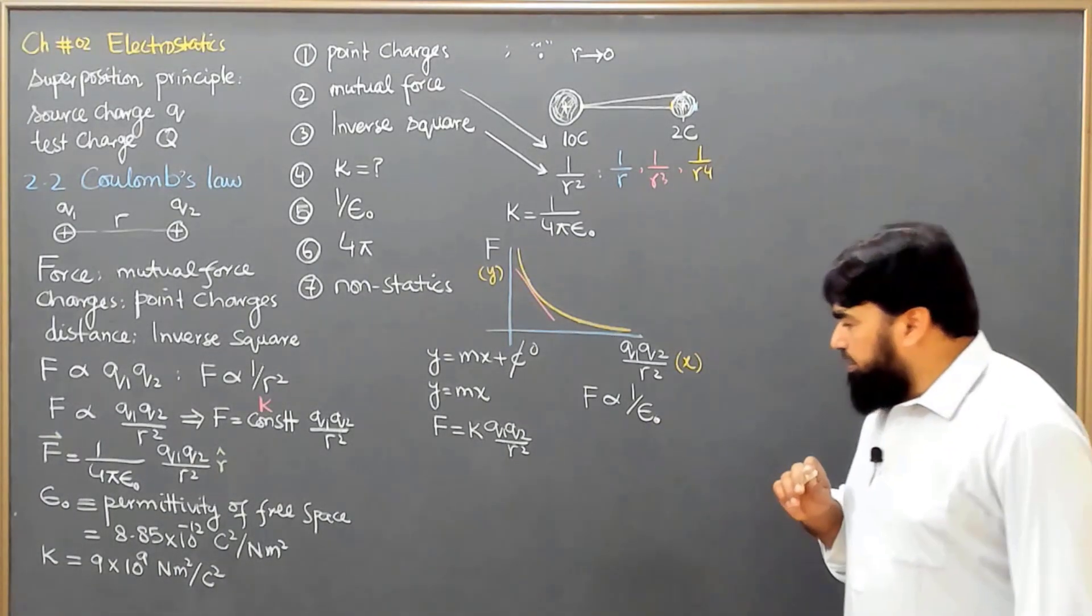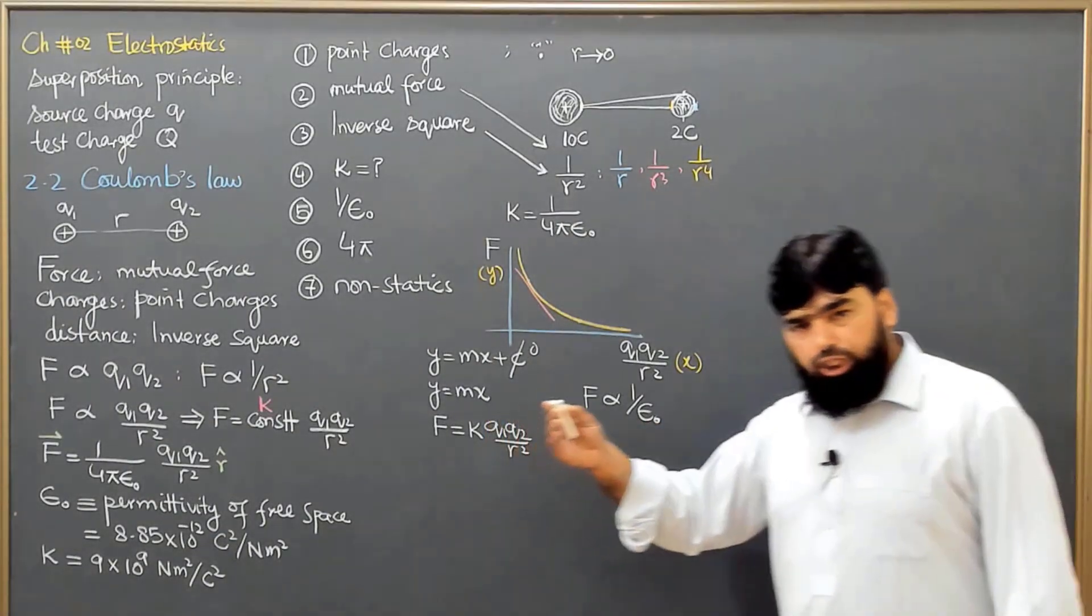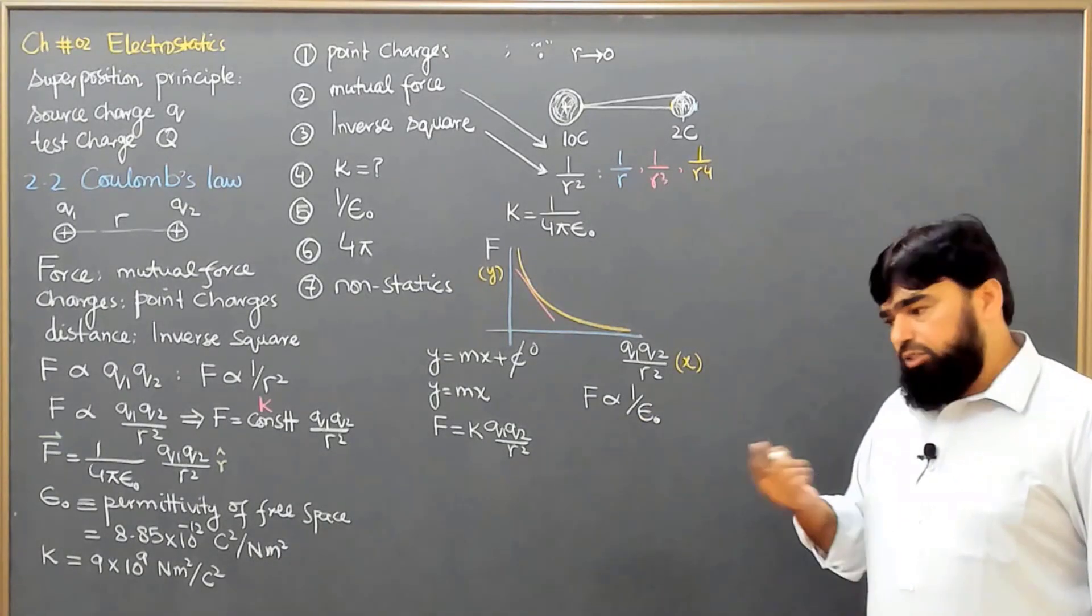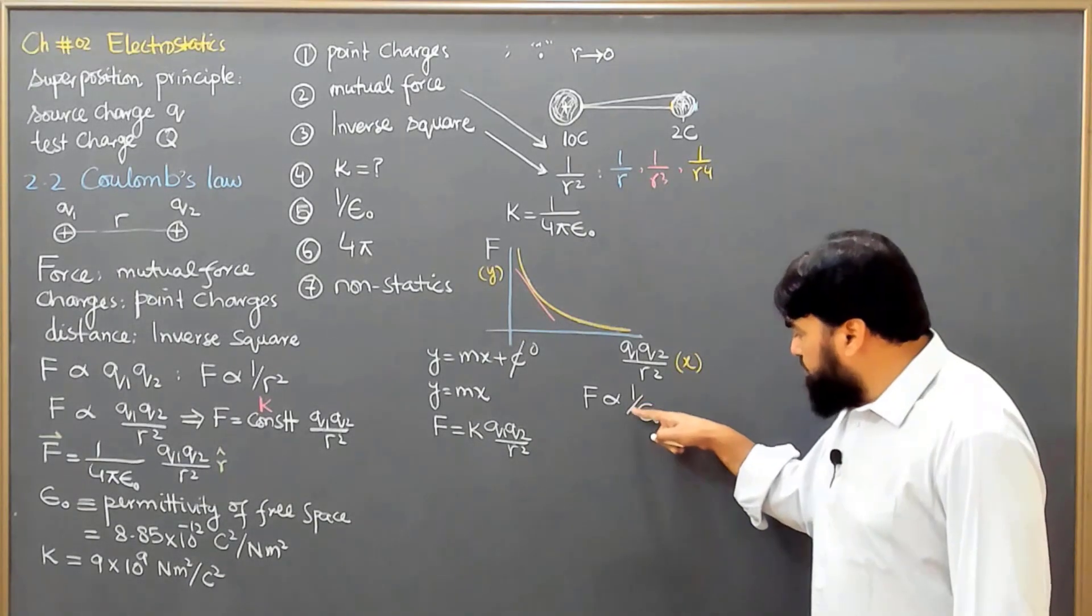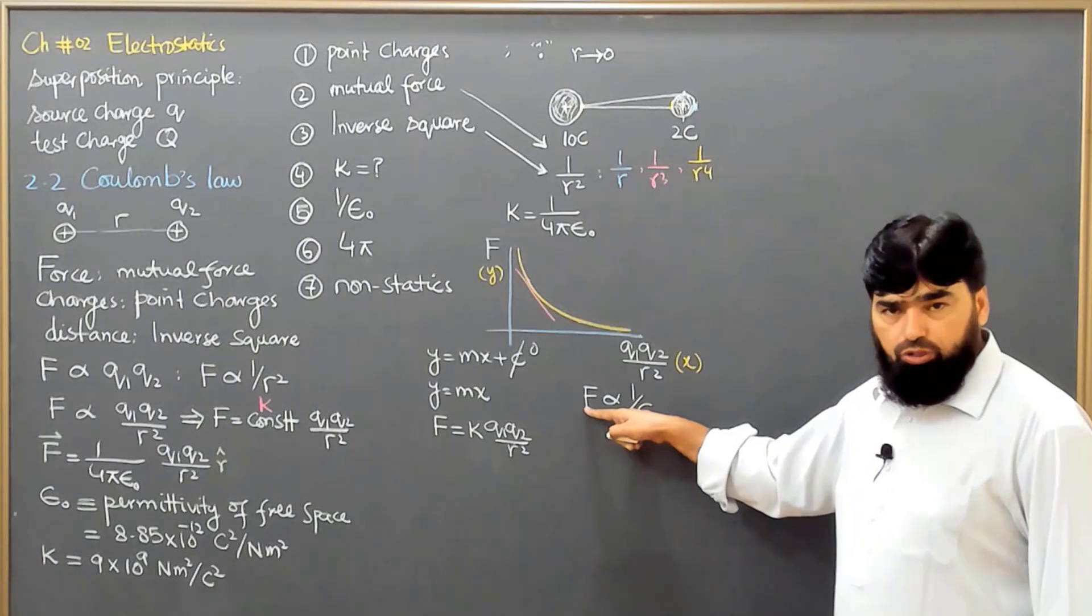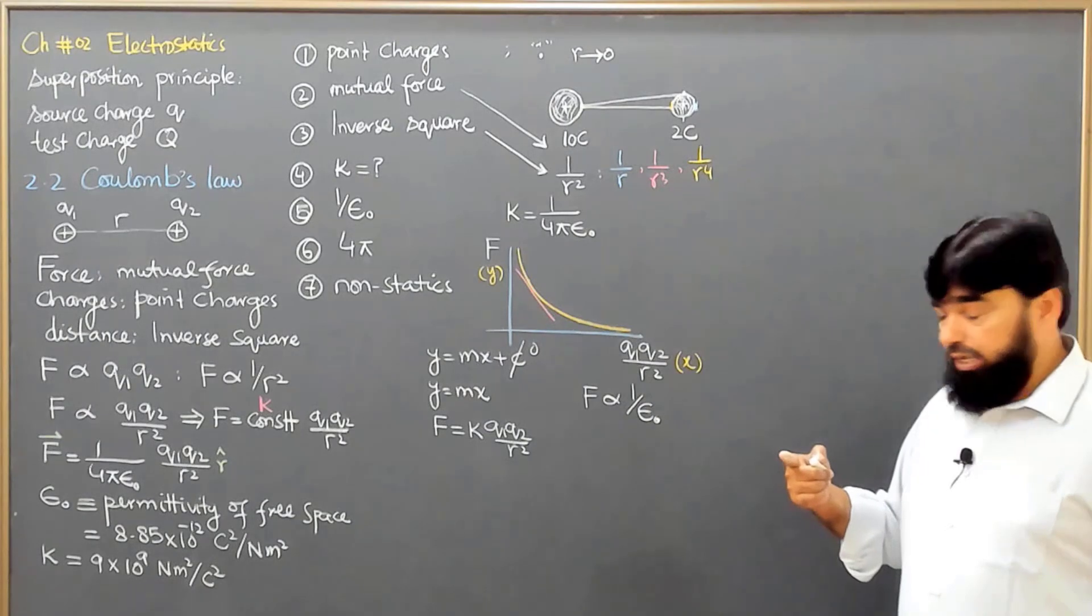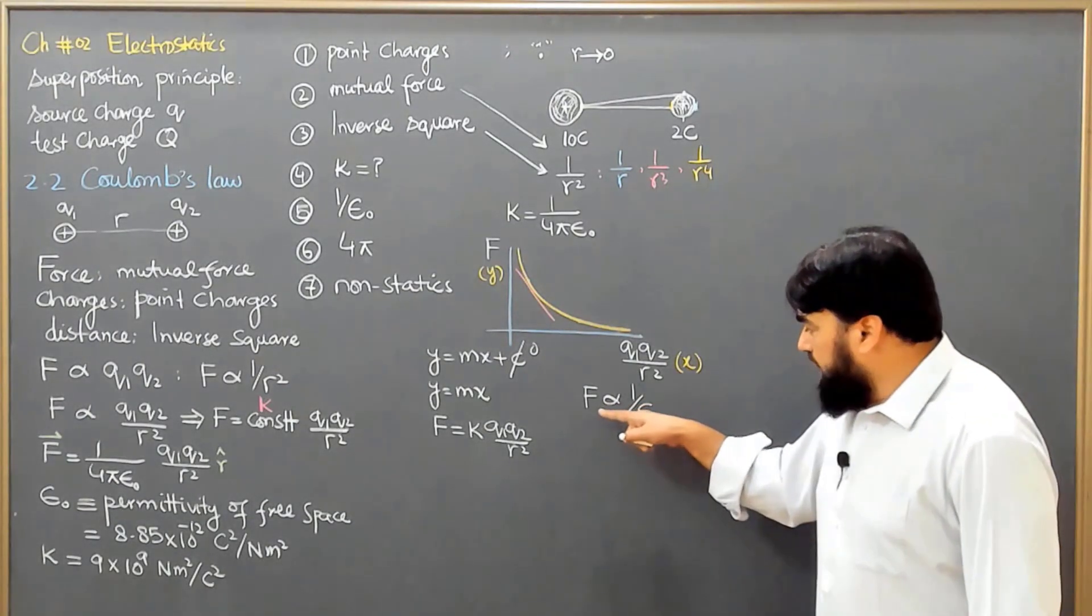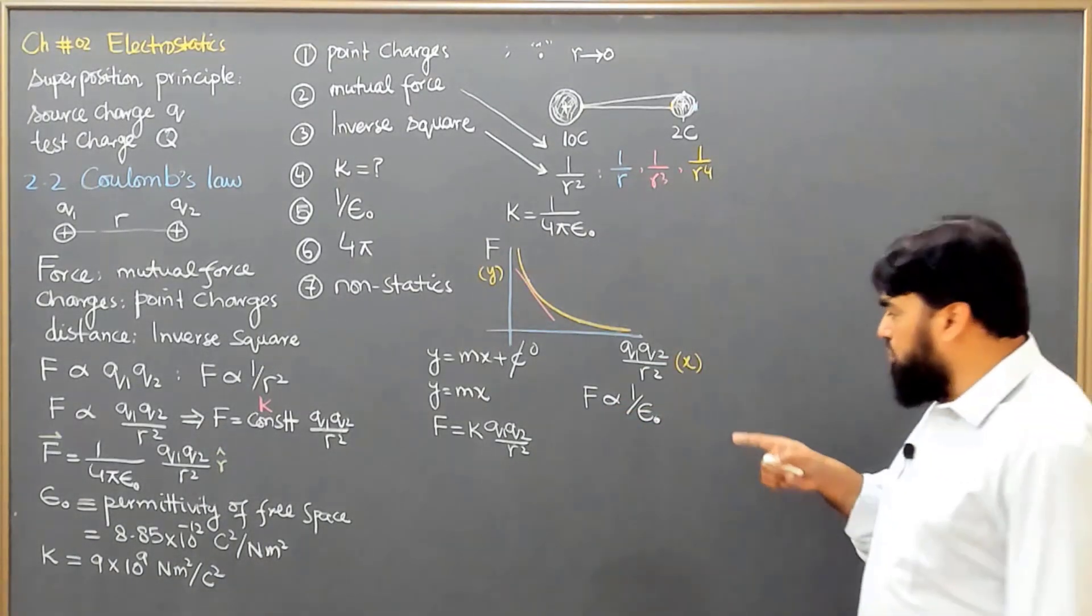For example, these lines will be just changing if we change this permission. But why is it inversely proportional? Why does it mean the more the permission, the less will be the force, because it is inversely proportional? Then why is this thing happening? Like for example, I will give you one example at the end as well and it will clarify things more.